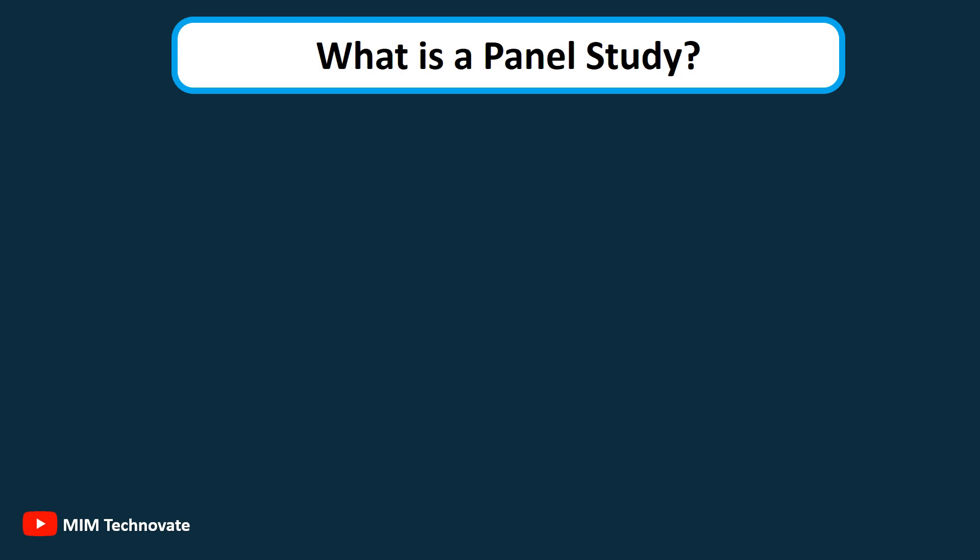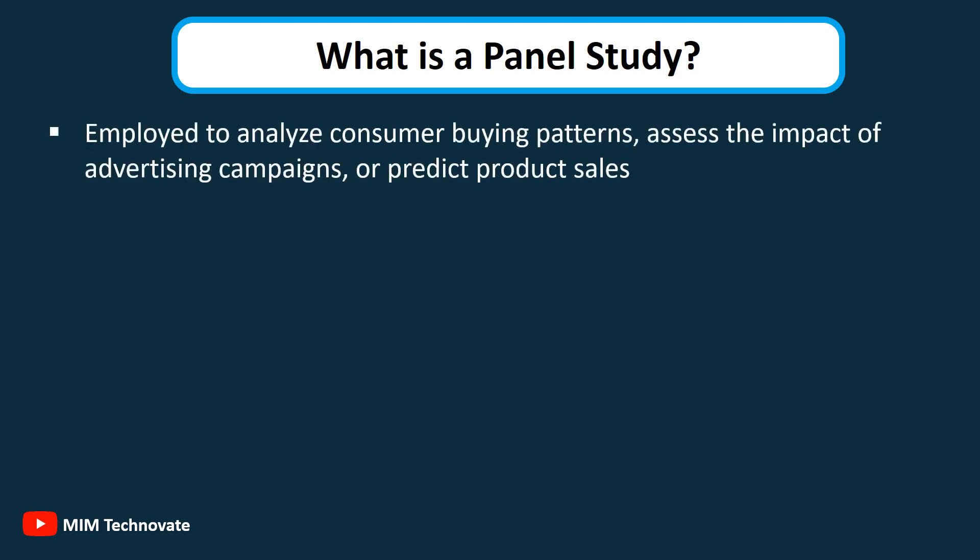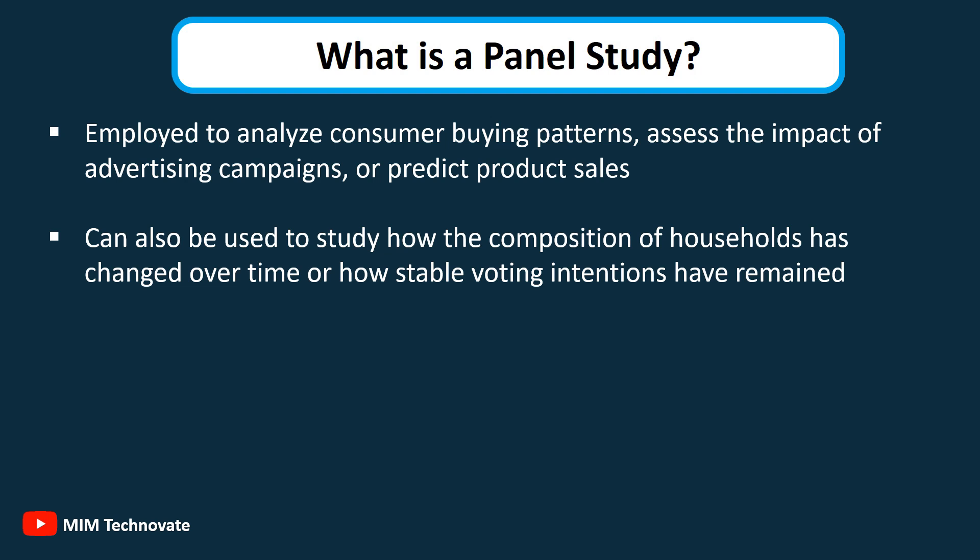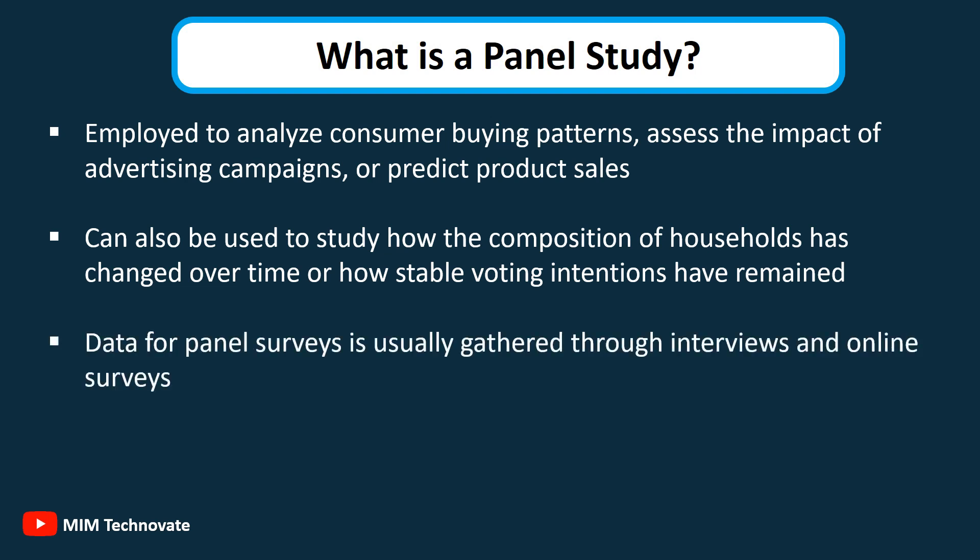These studies are commonly employed to analyze consumer buying patterns, assess the impact of advertising campaigns, or predict product sales. They can also be used to study how the composition of households has changed over time or how stable voting intentions have remained. Data for panel surveys is gathered through interviews and online surveys.